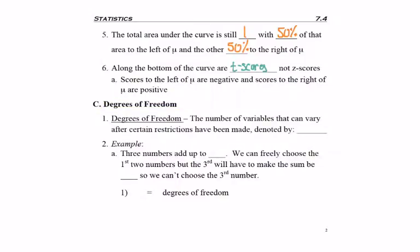So I'd like to go ahead and define that. It's the number of variables that can vary, kind of weird sounding, after certain restrictions have been made. And it's denoted by n minus 1, where n is your sample size.